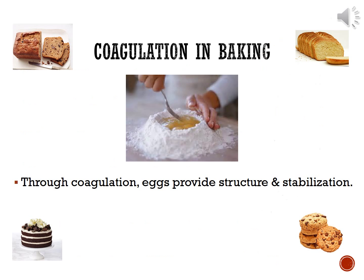All of the foods on this slide use eggs. Eggs are used for multiple functions, but the structure of each of these foods — keeping them tight and solid — is largely due to eggs used in their processing. When eggs are mixed into dough and cooked, the heating causes solidification, or coagulation, of the eggs. The eggs become a tougher structure, and even though they are loosely connected throughout the baked product, this connection still provides structure and stabilization to the entire product, helping it stay intact.